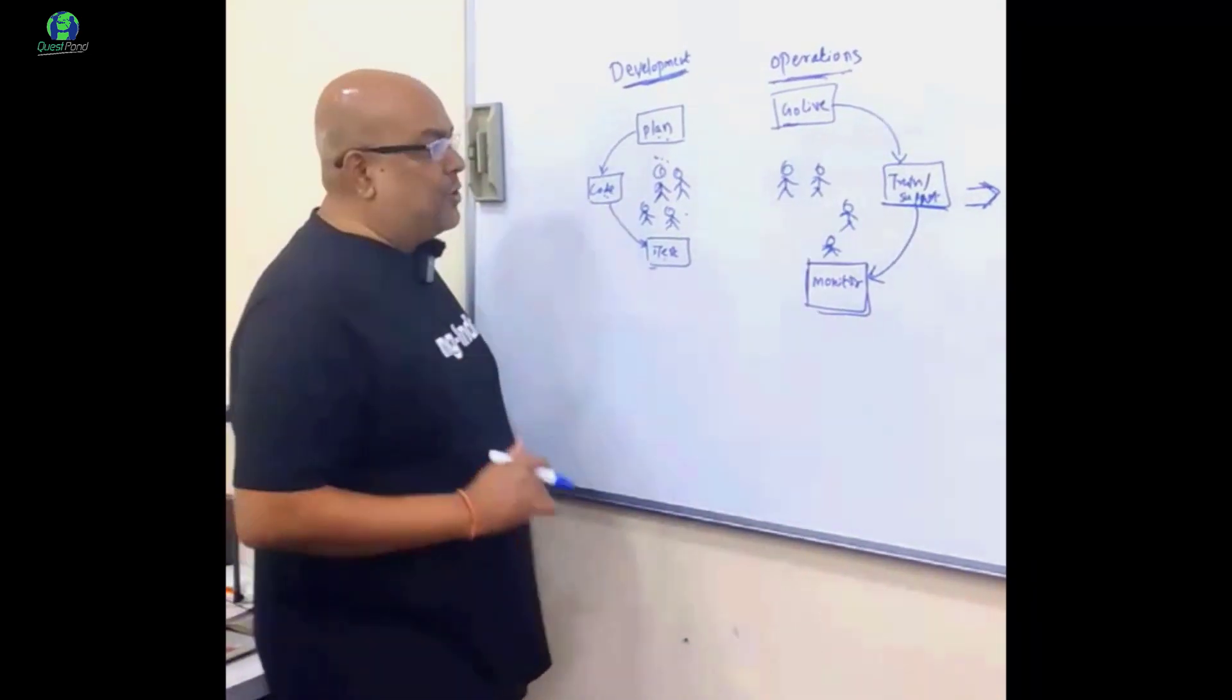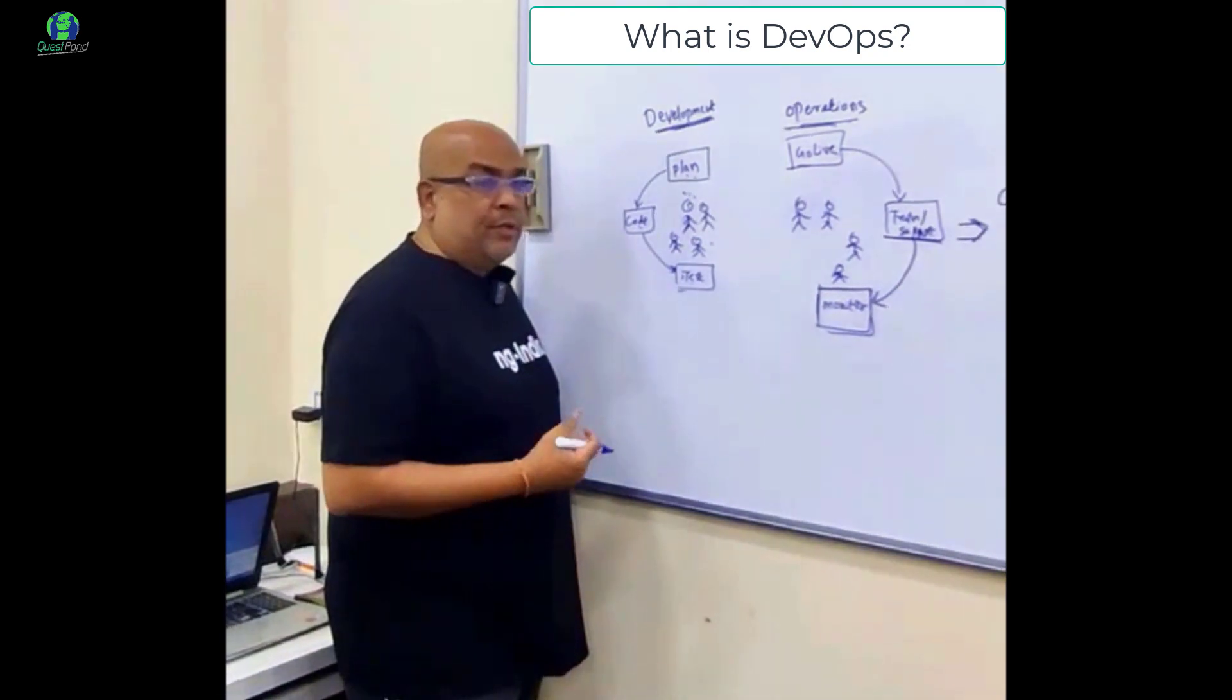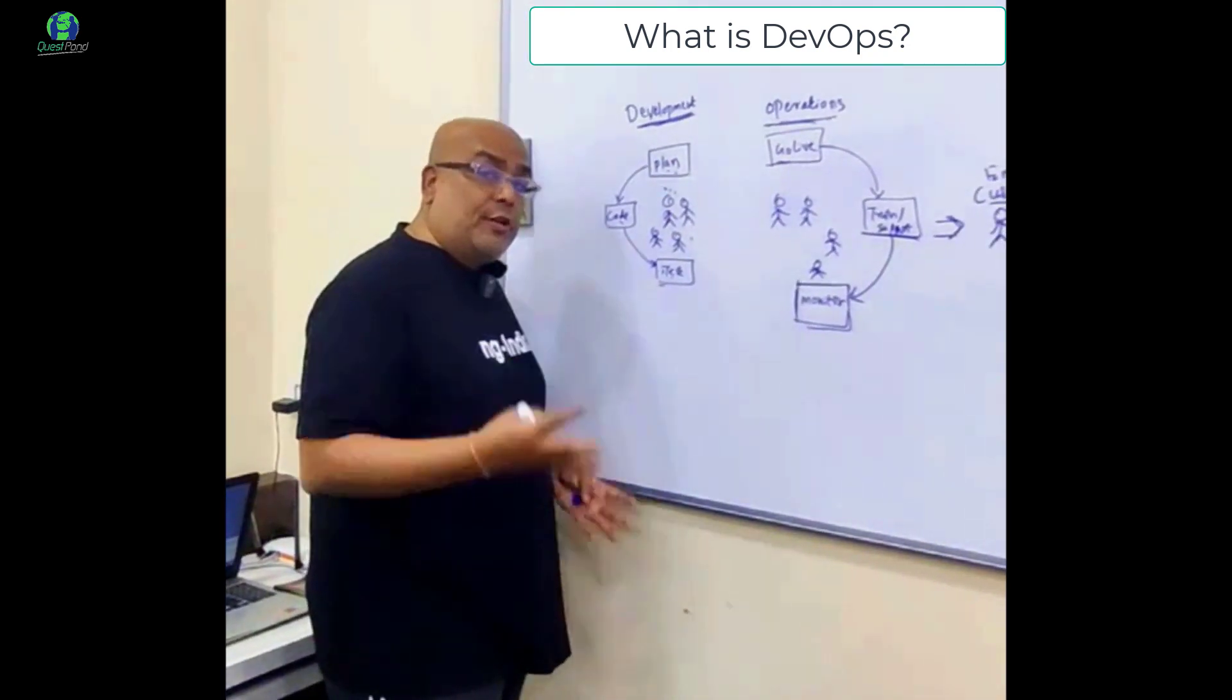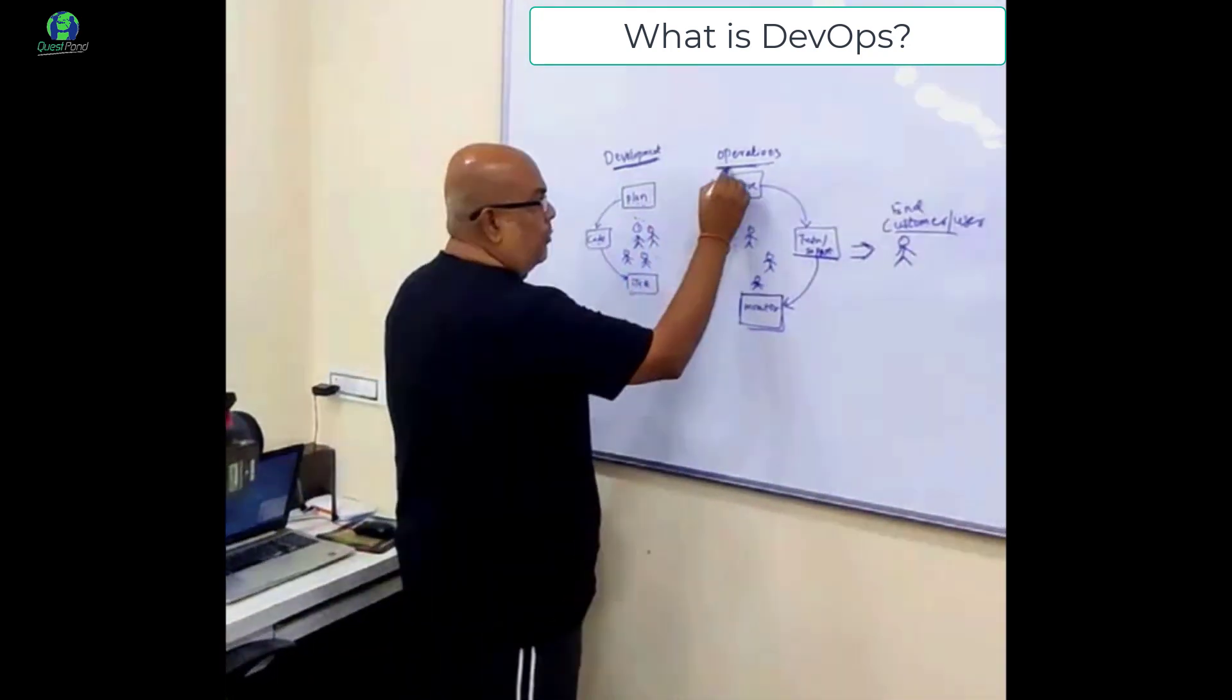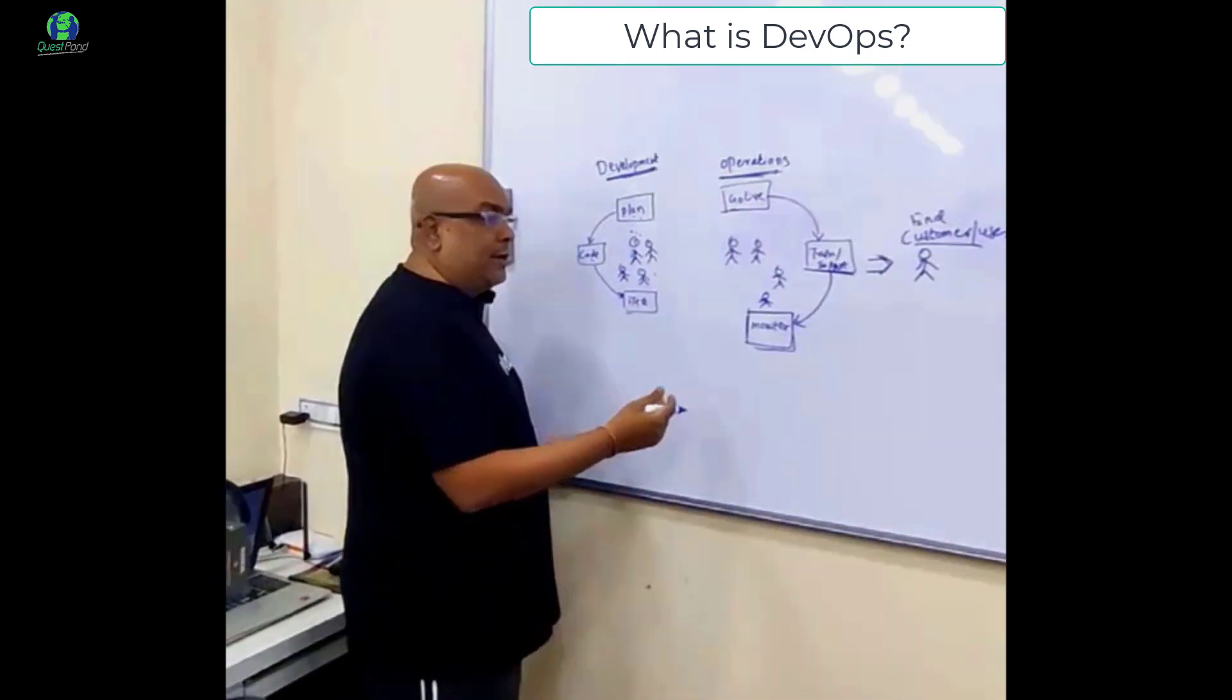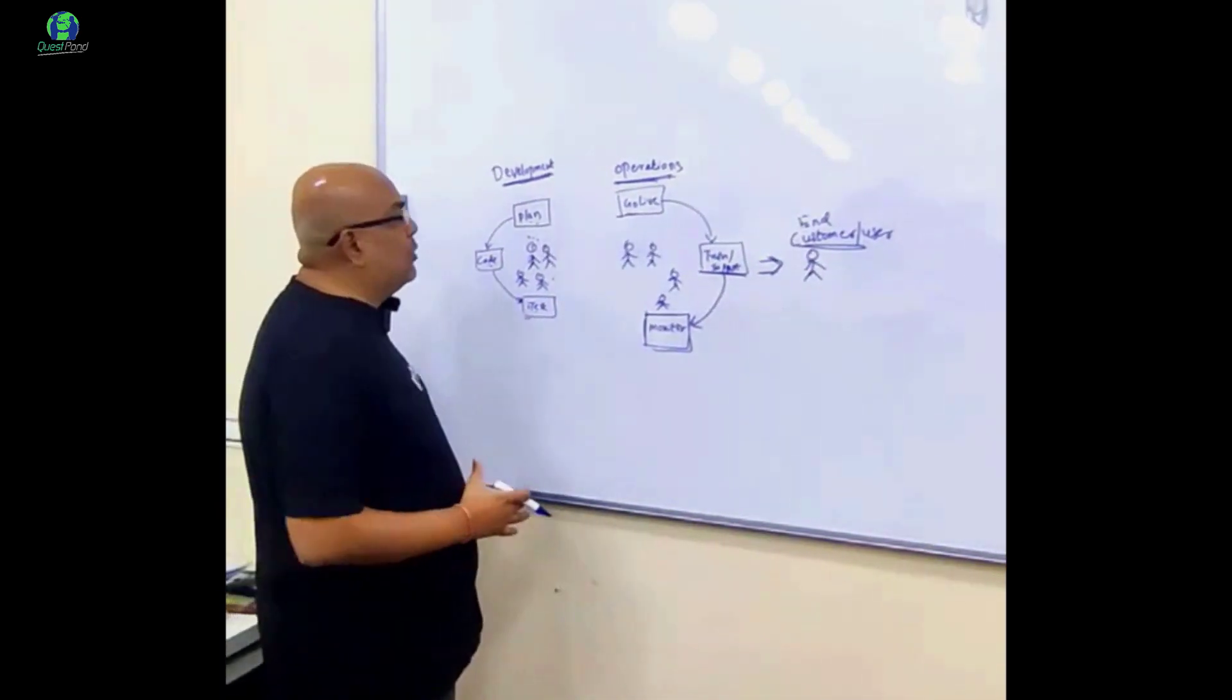Let us try to understand what is DevOps. So if you want to do software development, there are three major stakeholders. One is the development team who does the development, one is the operations team who help the end customer, and one is the end customer who uses our software. So there are three major stakeholders.